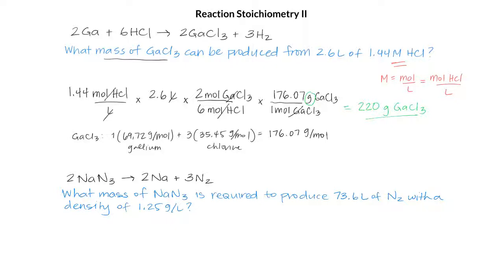We're starting with some volume of N2, and we need to end up with a mass of NaN3. So that tells us that we need to figure out the moles of N2 so we can use a mole ratio to get the moles of NaN3. Well, we have 73.6 liters of N2. And we can't convert volume into moles, but we can convert volume into mass using the density.